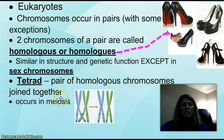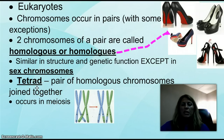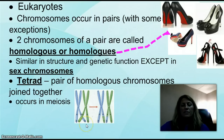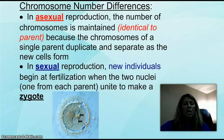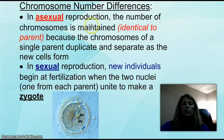A tetrad — which we'll see when we look at meiosis, the making of sex cells — is when I have a pair of homologous chromosomes. We'll look at a phenomenon called crossing over, which allows for organisms to be genetically different from one another. In asexual reproduction, the number of chromosomes are maintained, meaning they are identical to the parent, and that occurs through mitosis.